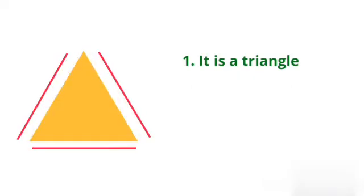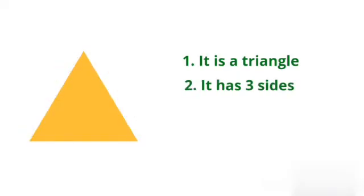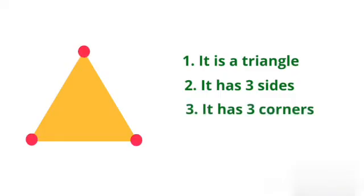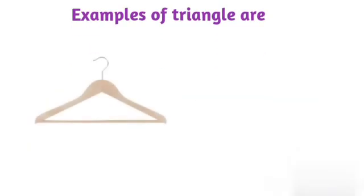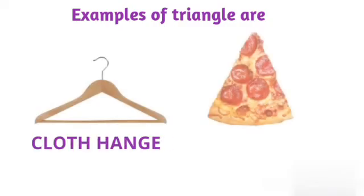Which is this shape? It is a triangle. It has one, two and three. Three sides. It has three corners. Some examples of triangle are cloth hangers and pizza slice.